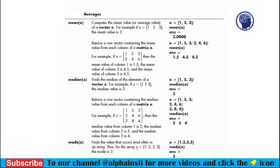The next topic is averages, and here we have mean, median, and mode. Using the mean function we can compute the mean value of a vector or the mean value of each column in a matrix. In the example, the vector X has a mean of 3. Similarly if we define a matrix, the mean function will calculate the mean of every column — the mean of 1 and 2 is 1.5, 5 and 4 is 4.5, and 3 and 6 is 4.5, giving three results.